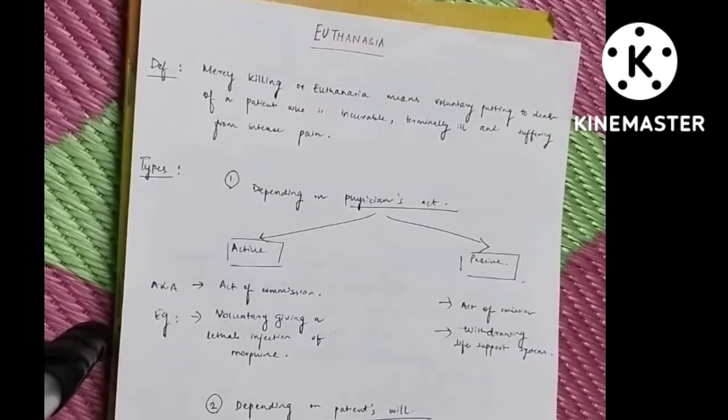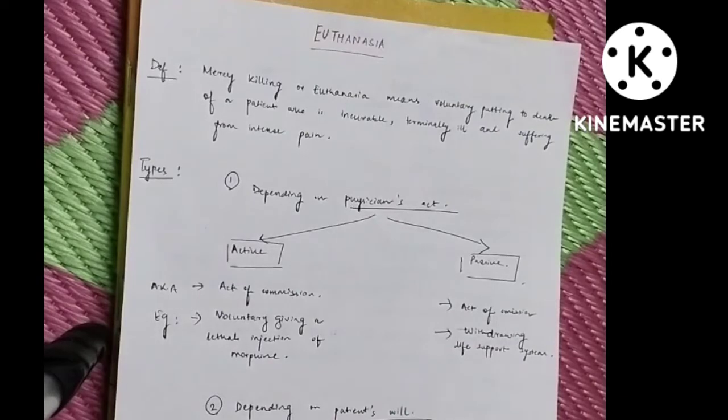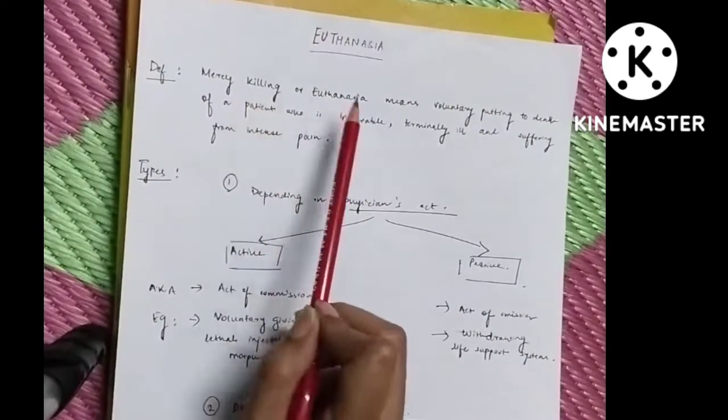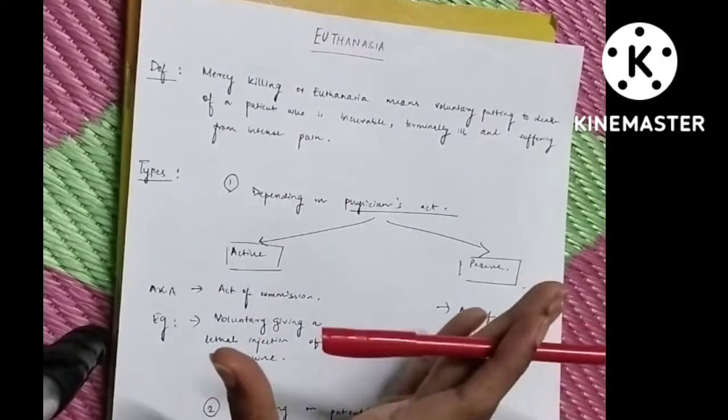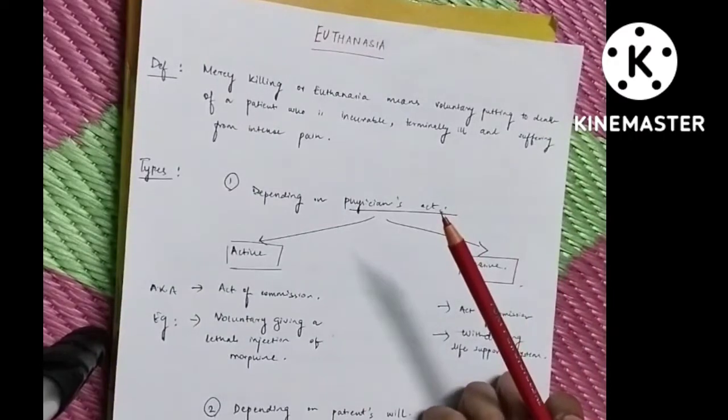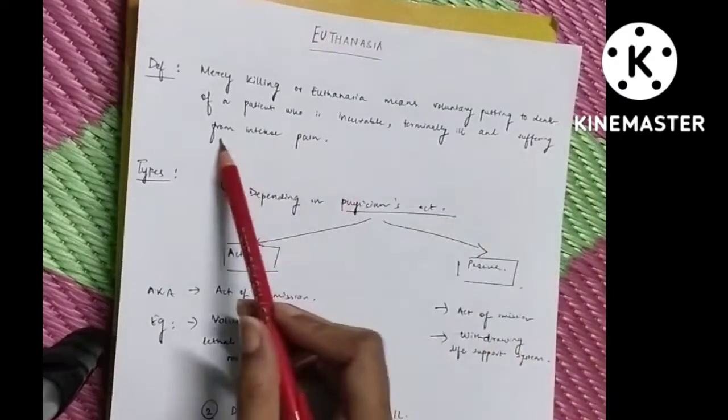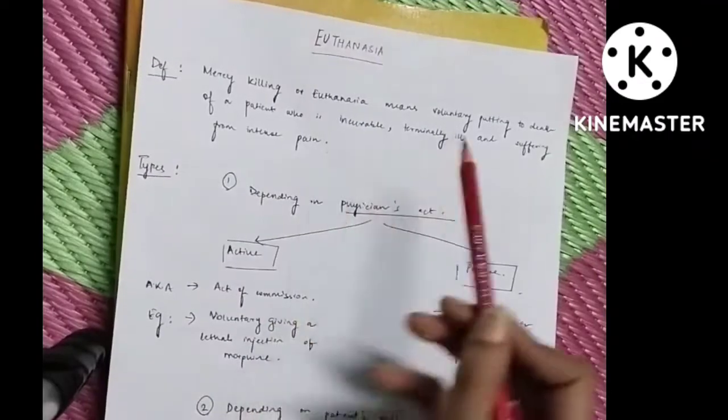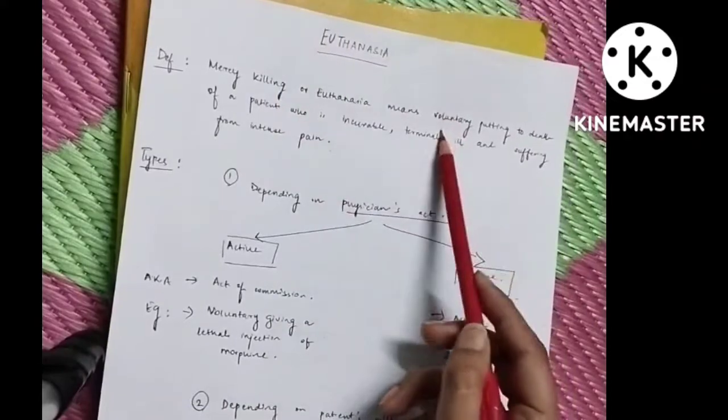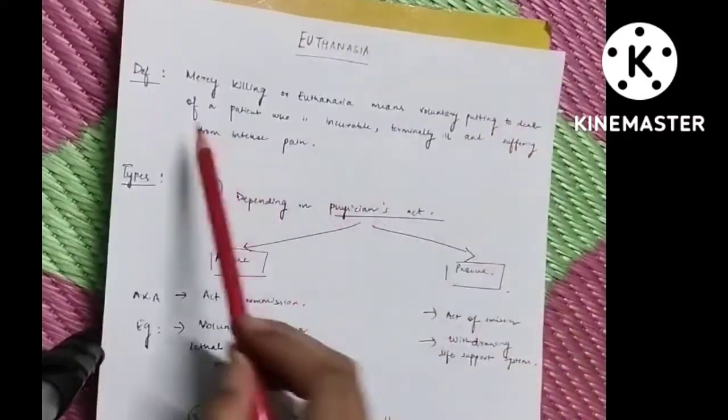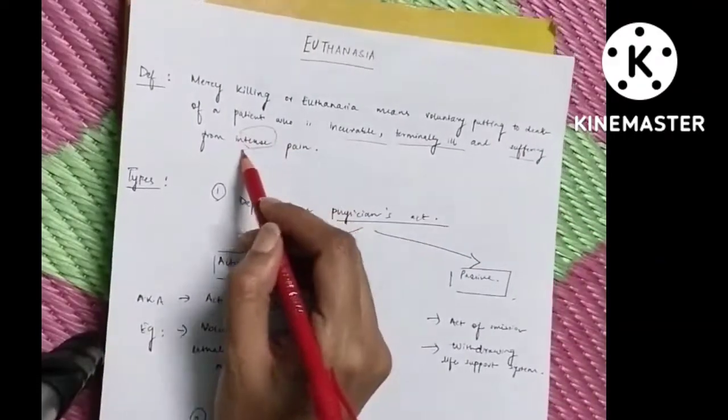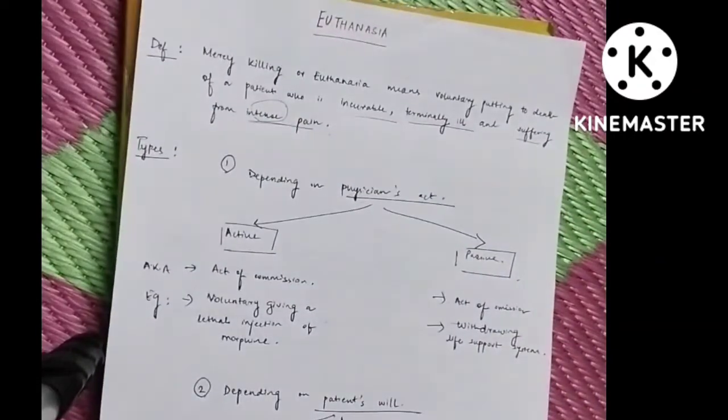Now let's begin with the definition of euthanasia. What does euthanasia mean? Mercy killing or euthanasia means that you are voluntarily putting a person to death. And which kind of patients will you put to death? Those who are incurable, those who are suffering from severe pain, and those who are terminally ill. The definition goes like: euthanasia or mercy killing means voluntarily putting to death of a patient who is incurable, who is terminally ill, and suffering from intense or severe pain.